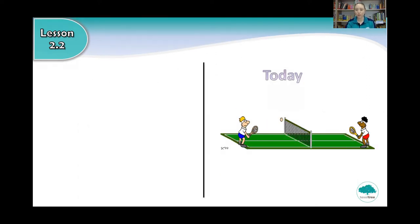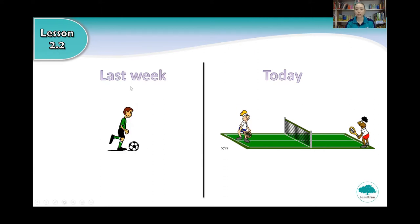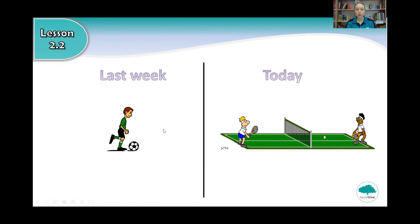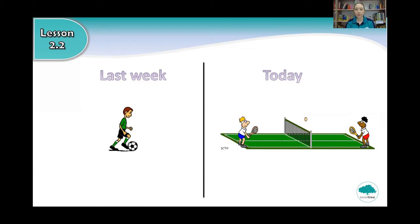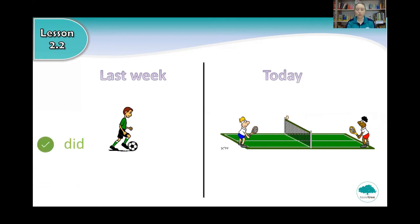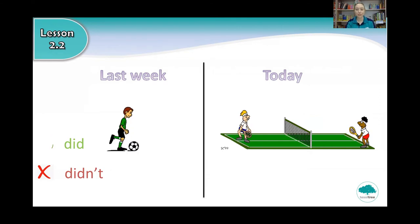So today, what are they doing? That's right, they are playing tennis. And what does this say? Last week. What was he doing last week? That's right, he was playing football last week. Do you remember what words we use when we talk about things that did and didn't happen in the past? That's right. We can use the word did for things that did happen, and the word didn't for things that didn't happen.